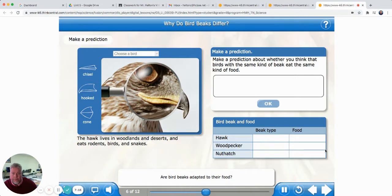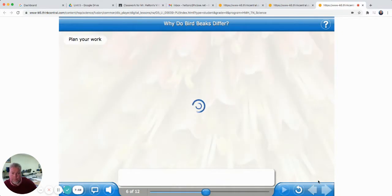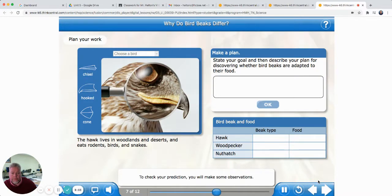You can observe birds and their beaks to compare and find similarities. Are bird beaks adapted to their food? Make a prediction about whether you think that birds with the same kind of beak eat the same kind of food. Well, it seems to me to make sense. Do you think birds that have the same kind of beak would eat the same kind of food? Yes, I think so. We think that similar beaks means that the birds eat similar foods. Continue to see if your prediction is correct.